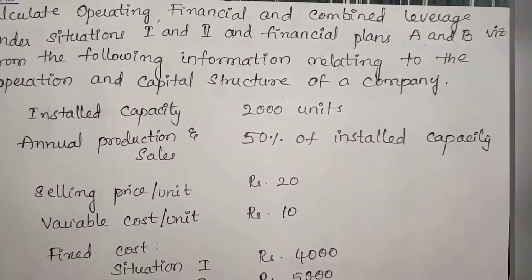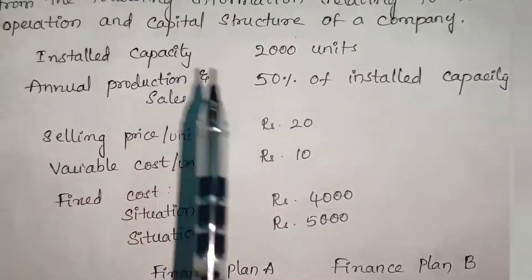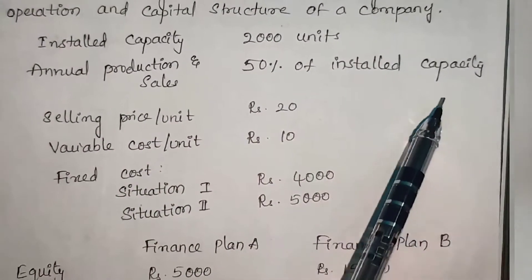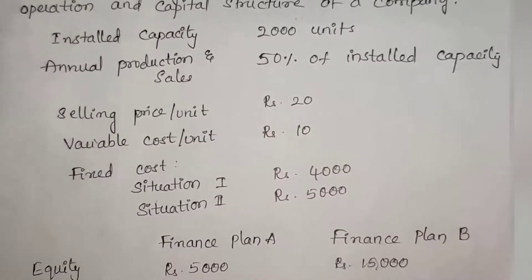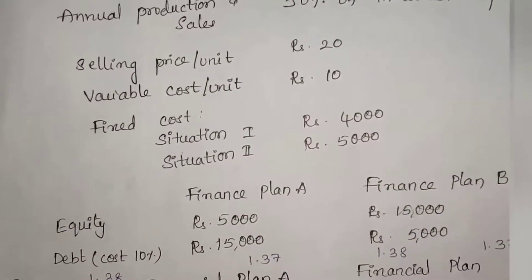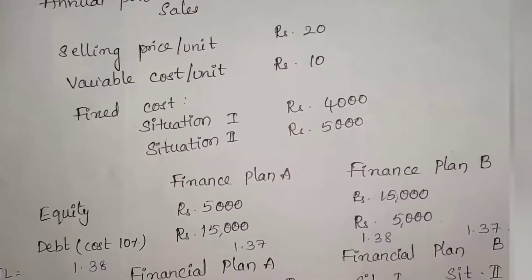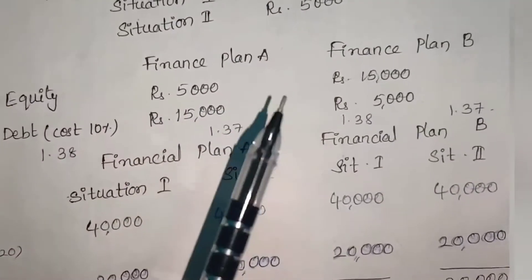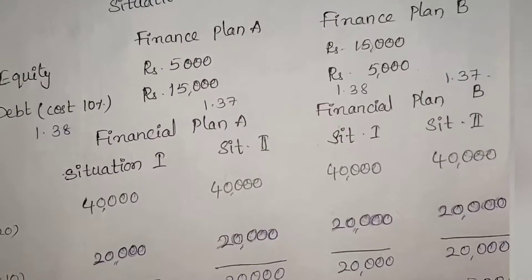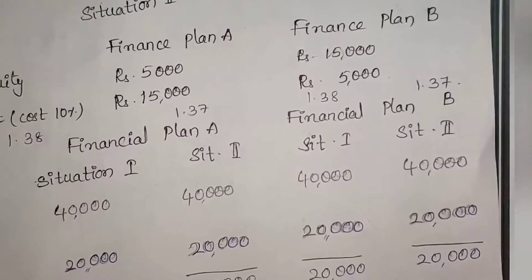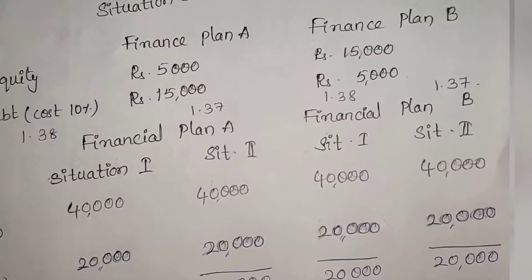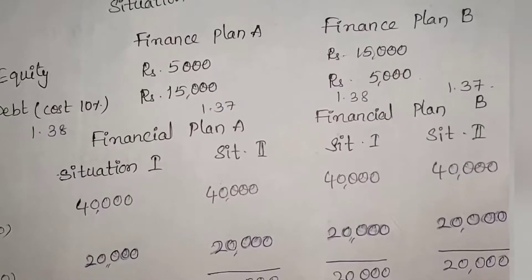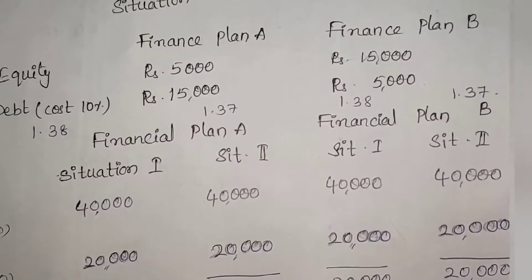The installed capacity is 2000 units. Annual production and sales are 50% of installed capacity. Selling price per unit is ₹20. Variable cost per unit is ₹10. Fixed cost: situation 1 is ₹4000 and situation 2 is ₹5000. Financial plan A has equity of ₹5000 and debt at 10% interest of ₹15,000. Financial plan B has equity of ₹15,000 and debt of ₹5000.